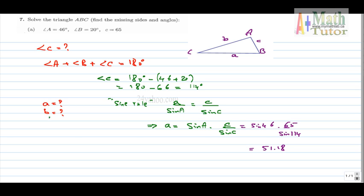We do the same to find side B, so apply sine rule, and we get B over sine angle B is equal to C over sine angle C. This implies B equals sine B multiplied by C over sine C, and this is sine angle 20 degrees, multiplied by C, which is 65, over sine 114. Using calculator, you get 24.33 units. Finish.